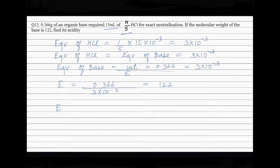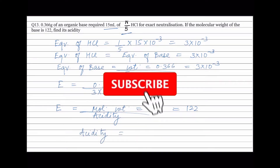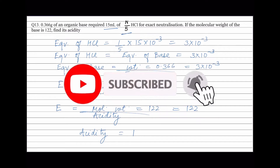Now, equivalent weight of the base is equal to molecular weight of the base divided by acidity of the base. The molecular weight of the base is given as 122 and the equivalent weight is 122. Solving this equation, we get the value for the acidity of the base equals 1.